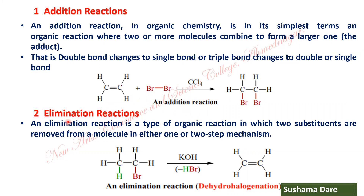The second type of reaction is elimination reaction. It is exactly opposite of the addition reaction. That is, if the degree of unsaturation increases — meaning single bond changes to double bond, or double bond changes to triple bond — that type of reactions are called elimination reactions.